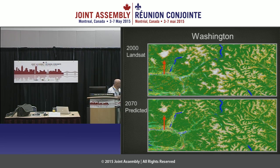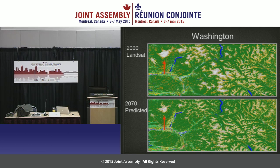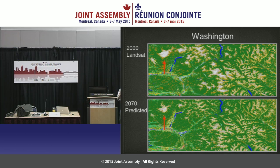At the Washington site, the classification map shows the same ring of perennial snow cover in white. When we run the classification for 2070, you see the loss of snow cover, and as the snow cover disappears the evergreens start to fill into those areas.